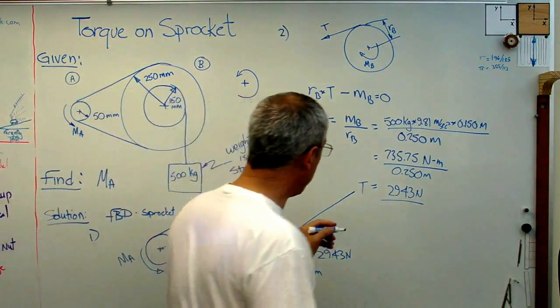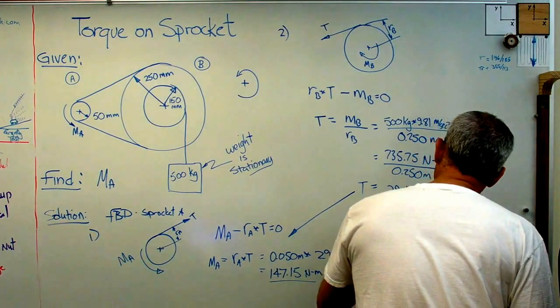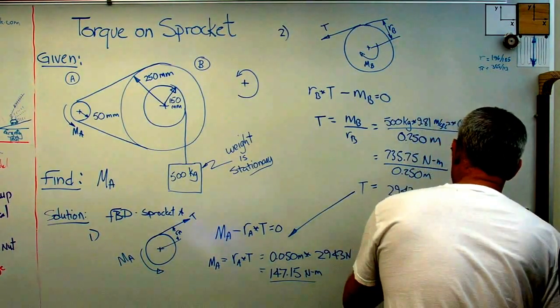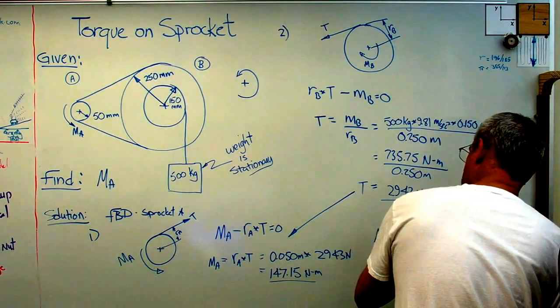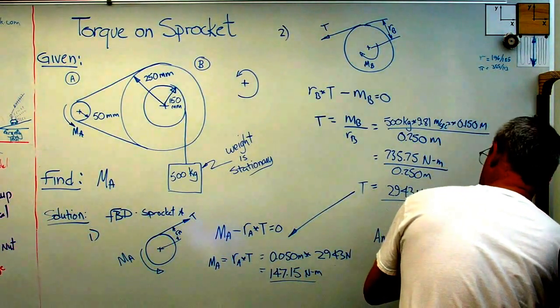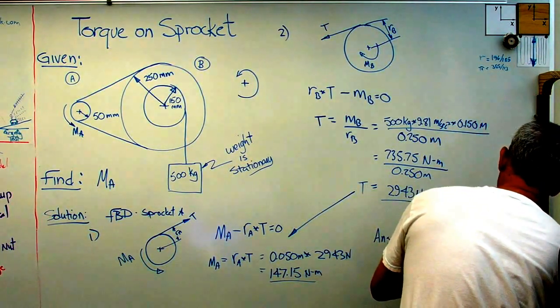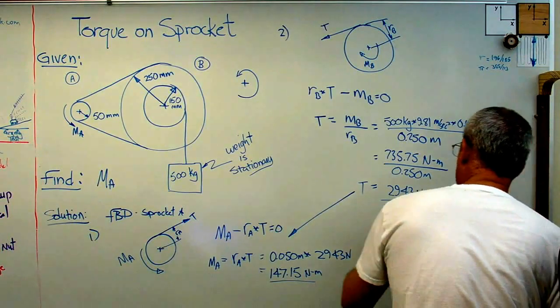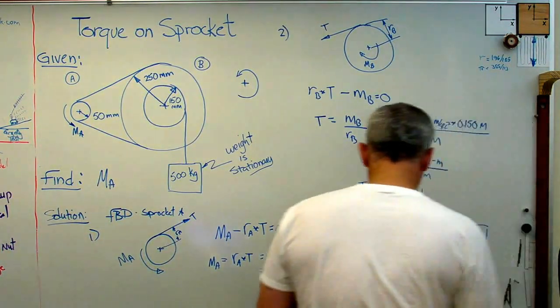So I'm going to write down the word answer. And I'm going to write down Ma equals 147.15 newton meters. Draw a box around that. Okay, so there you go.